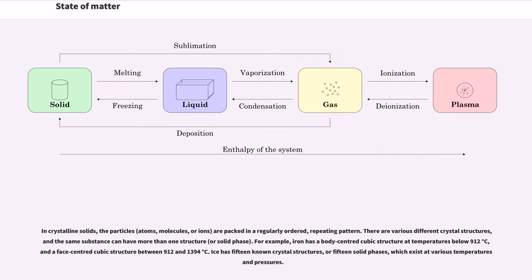In crystalline solids, the particles - atoms, molecules, or ions - are packed in a regularly ordered, repeating pattern. There are various different crystal structures, and the same substance can have more than one structure, or solid phase. For example, iron has a body-centered cubic structure at temperatures below 912 degrees Celsius, and a face-centered cubic structure between 912 and 1394 degrees Celsius. Ice has 15 known crystal structures, or 15 solid phases, which exist at various temperatures and pressures.